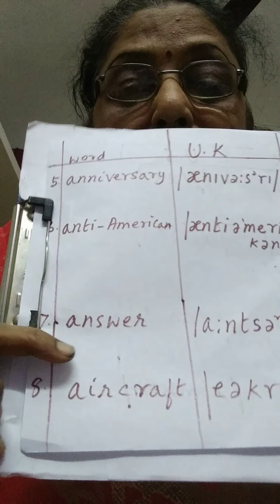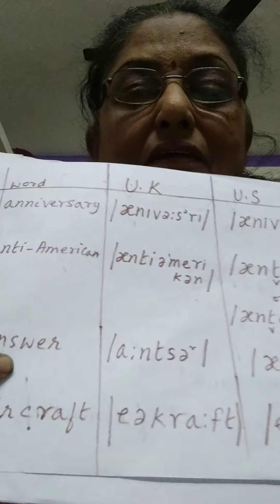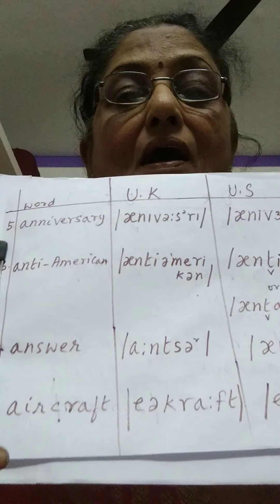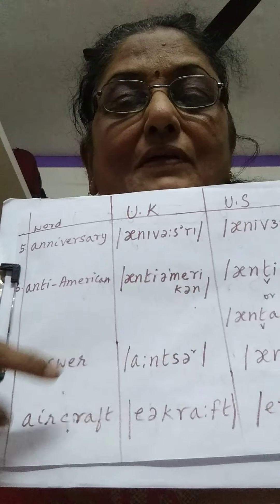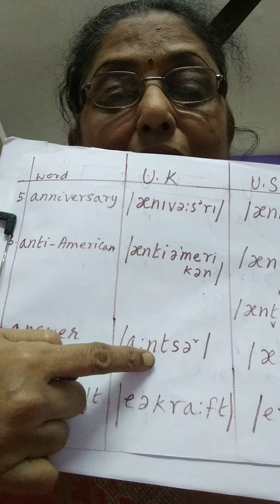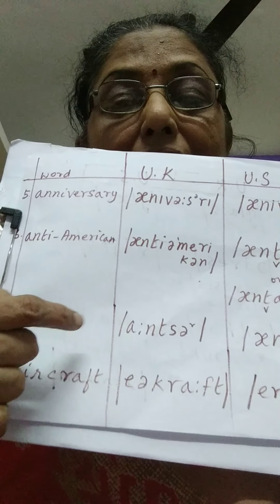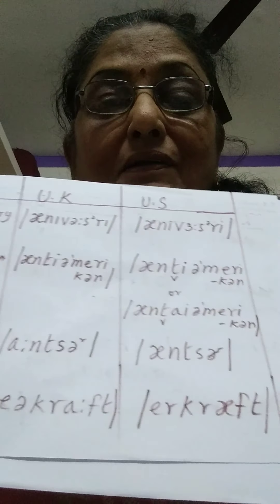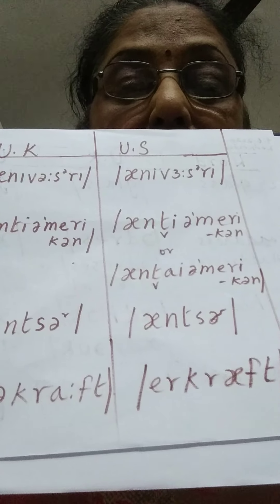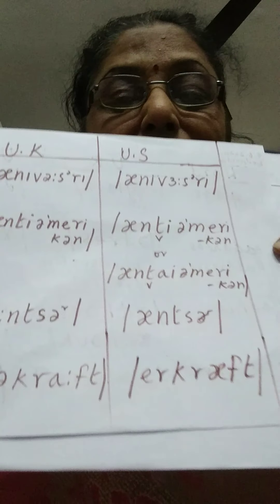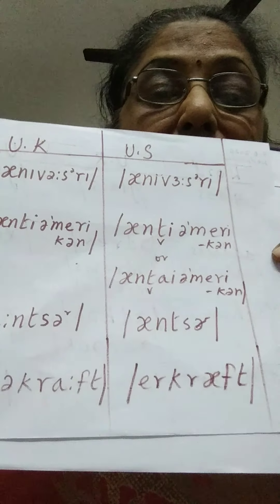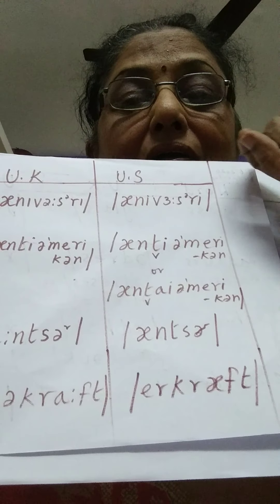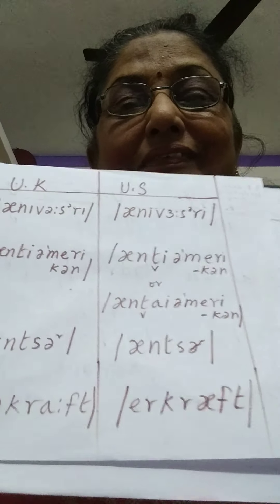The next word is 'answer.' There is a sort of imaginary sound — we don't say 'answer,' we must say 'answer,' with a light 'r' sound at the end, which is why the phonetic transcription includes that symbol. Americans pronounce it as 'answer,' and at the end there is a curve symbol indicating the flapping R.